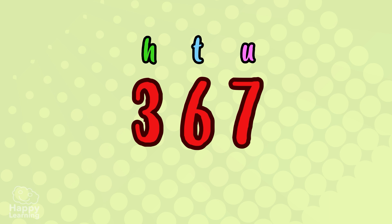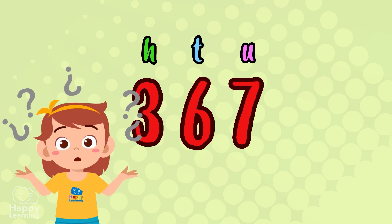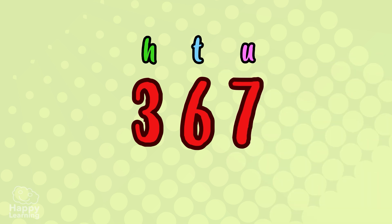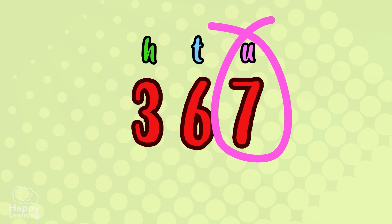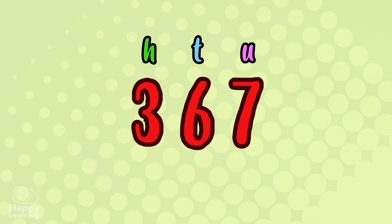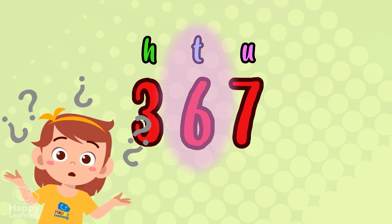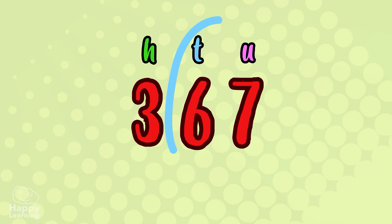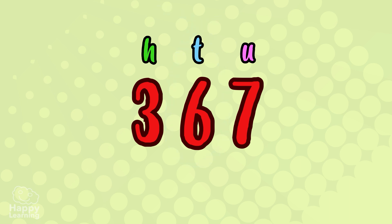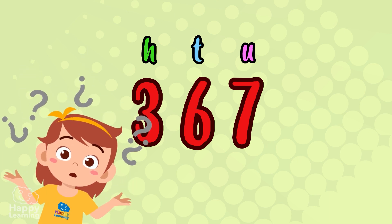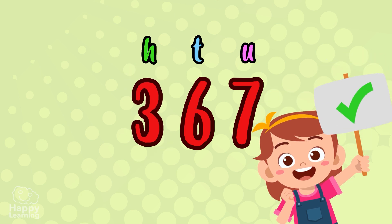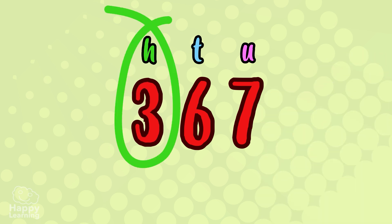Now it's your turn. How many units do you think there are? Very good — there are seven units. The units are written in the first position, counting from the right. How many tens are there? Yes, very good — there are six tens. The tens are written in the second position, counting from the right. And thirdly, how many hundreds do you see? Exactly three hundreds. The hundreds are written in the third position, counting from the right.